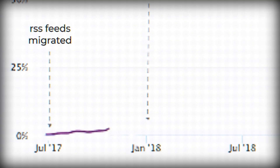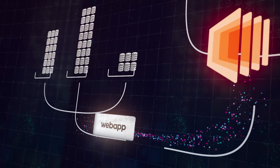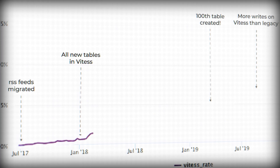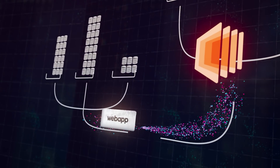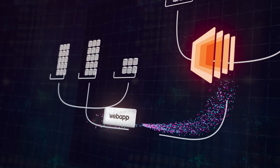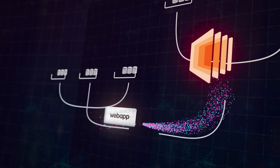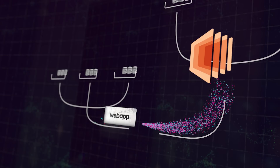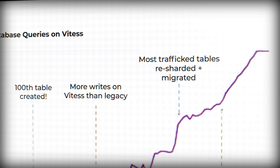Six months after migrating the RSS feeds, all new tables were created in Vitess. One year later, 25% of all tables were migrated. In July of 2019, there were more writes to Vitess than to the legacy database system. And in December of 2019, about 45% of the tables had migrated over.